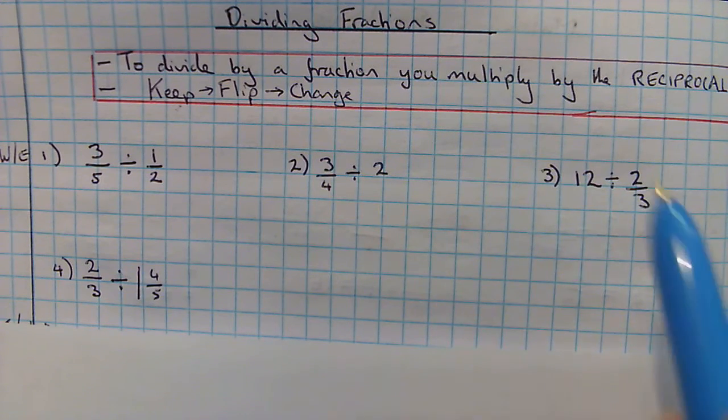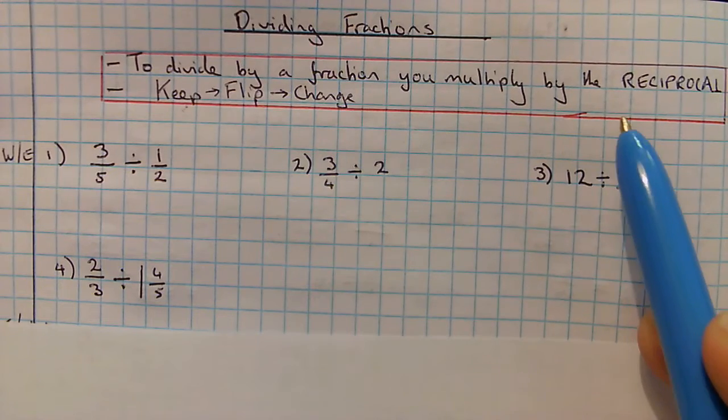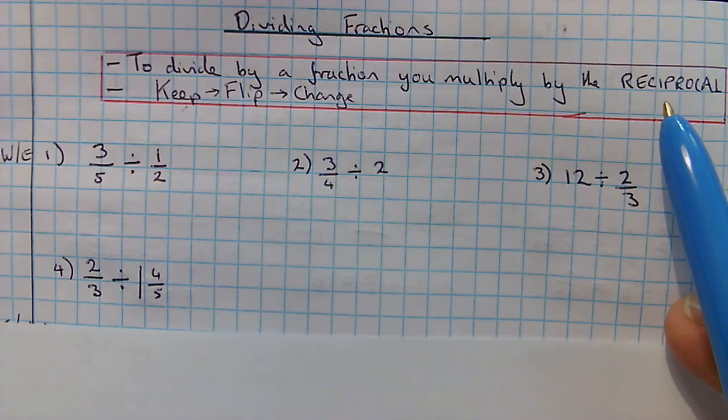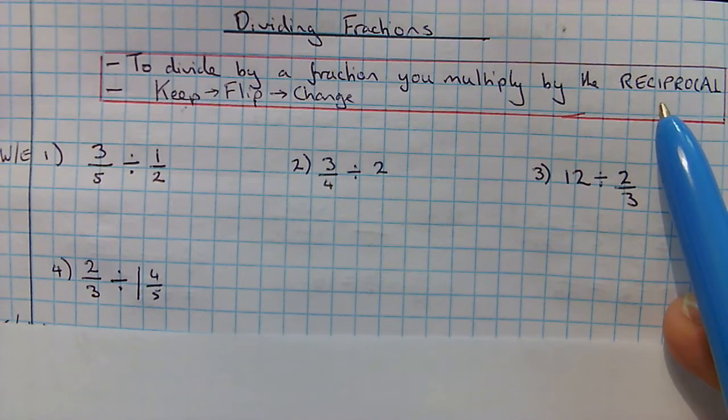So, to divide by a fraction, we multiply by the reciprocal. And the reciprocal is that fraction turned upside down.